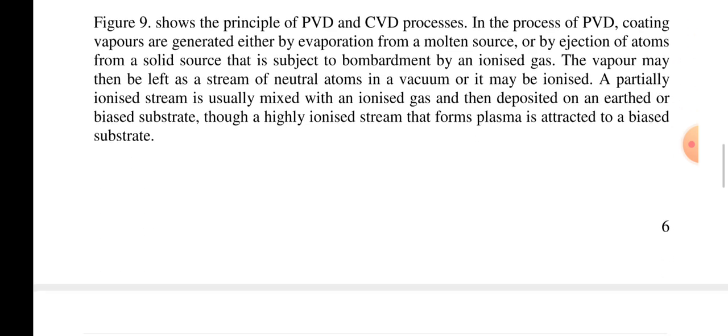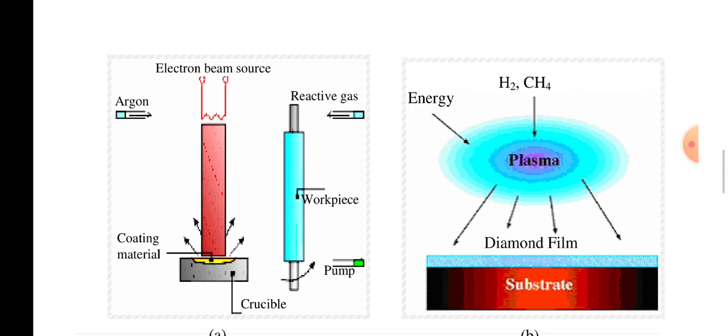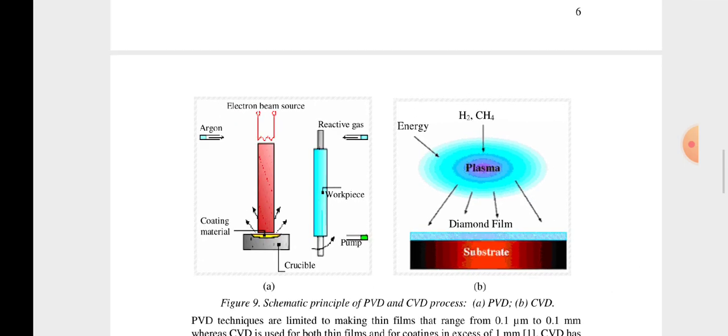Now that I need some figure I am showing here. You are showing the airborne, then the reactive gas, the work piece, then crucible, then electron beam, then surfaces, then reactive gas, then energy H2 and CH4 - that is plasma we are using. Then diamond film, that is substrate. Then electron beam source is available, the pump is available with work piece.